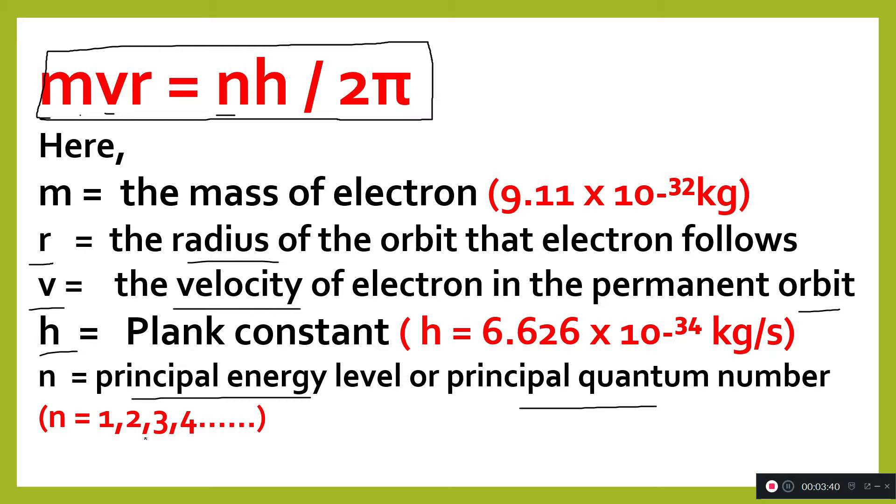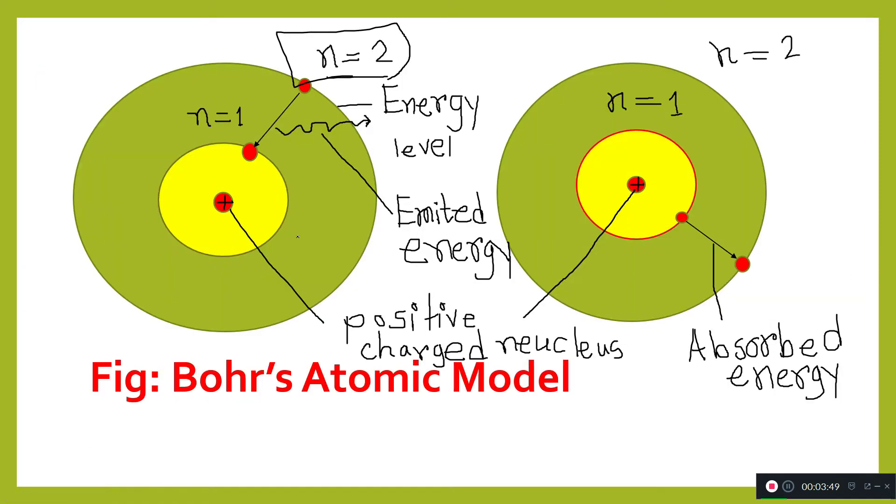According to this, energy levels with lower values of n are lower energy levels. Here n equals 1 is lower energy, and n equals 2 is higher energy level. When an electron moves around its principal energy level, it doesn't absorb or emit any energy.